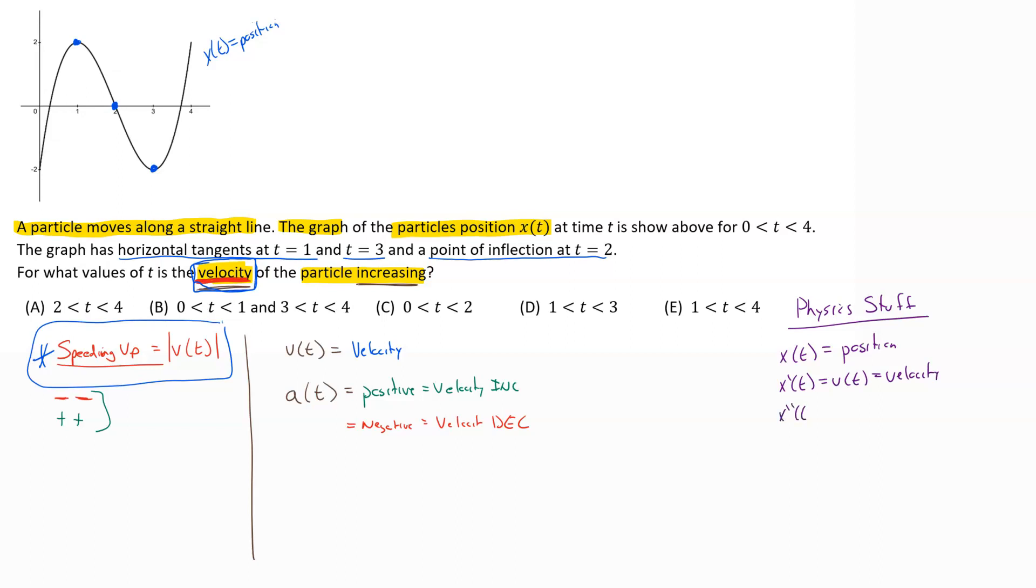And the second derivative of position is the first derivative of velocity, that is acceleration. So what we need is we need positive acceleration, which means we need a positive second derivative - that our second derivative of our equation needs to be greater than zero.